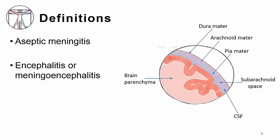Aseptic meningitis is when you have inflammation of the meninges, which are shown in this cartoon here, and when we send the CSF for culture for bacteria, nothing grows. This is in contrast to bacterial meningitis in which we do the same tests but we do isolate bacteria. Encephalitis occurs when you have inflammation of the brain parenchyma, and meningoencephalitis occurs when you have both inflammation of the brain parenchyma as well as the meninges.